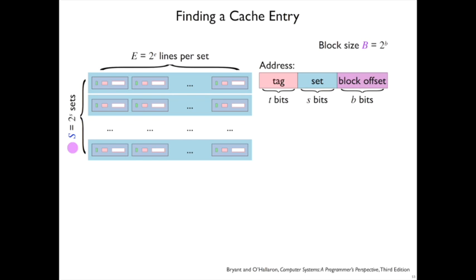So we're going to use S to represent the number of sets we have, and we'll use E to represent the number of lines we have per set. Another word for E is the associativity of the set, as we will see.